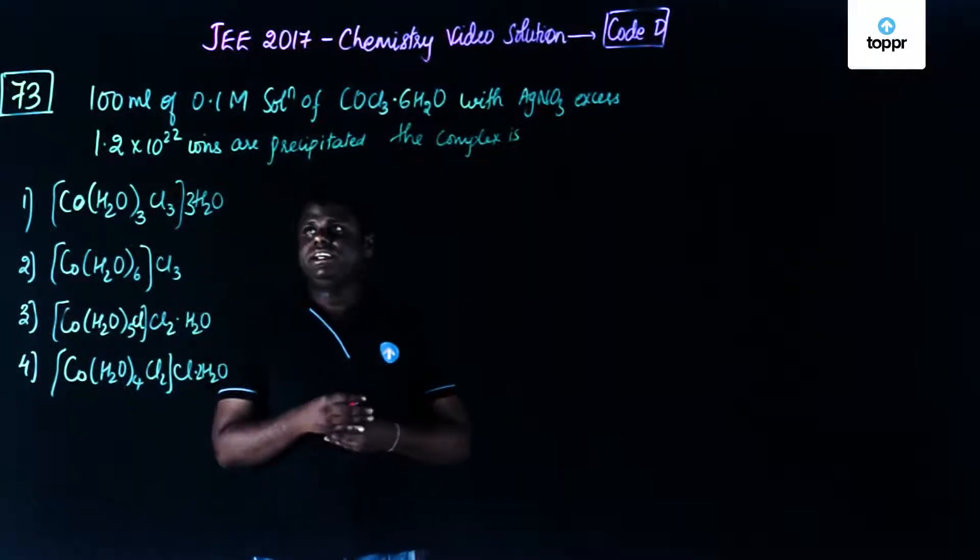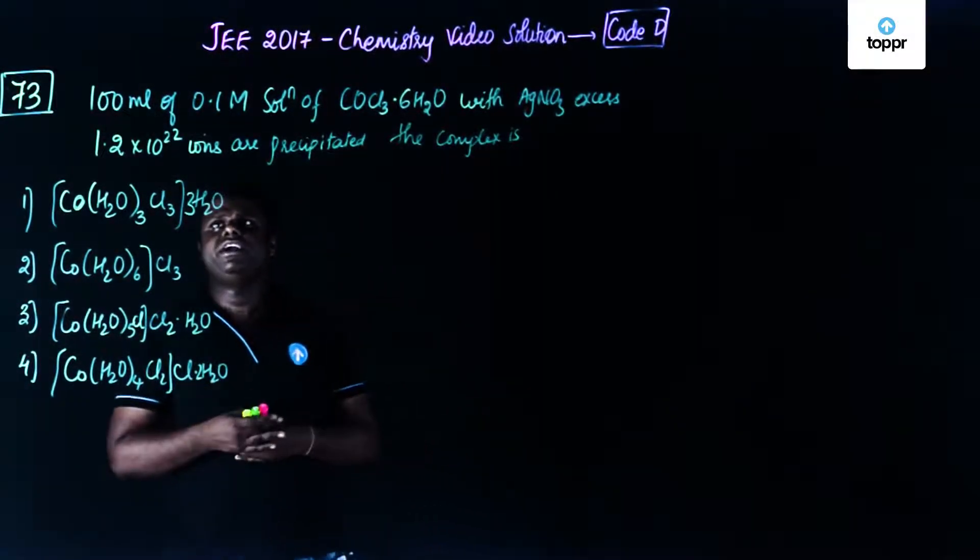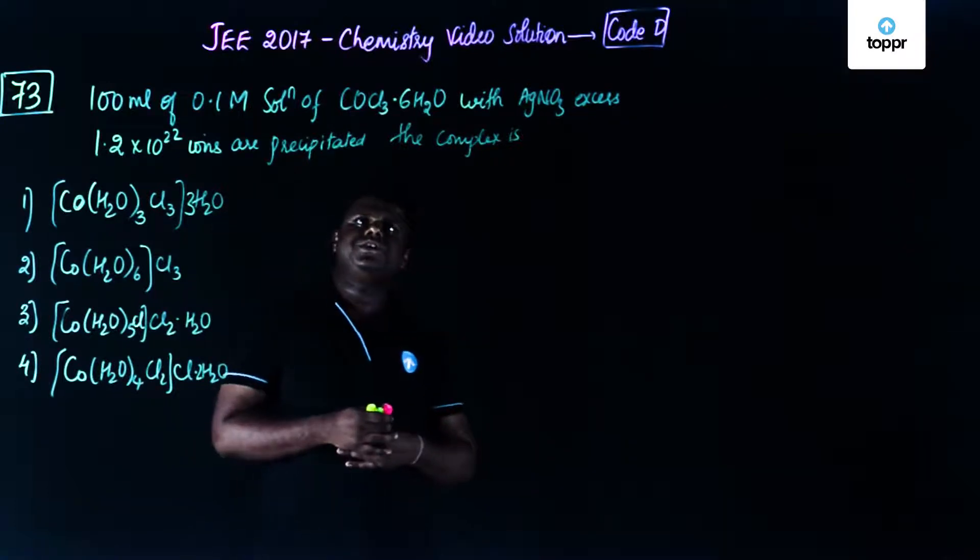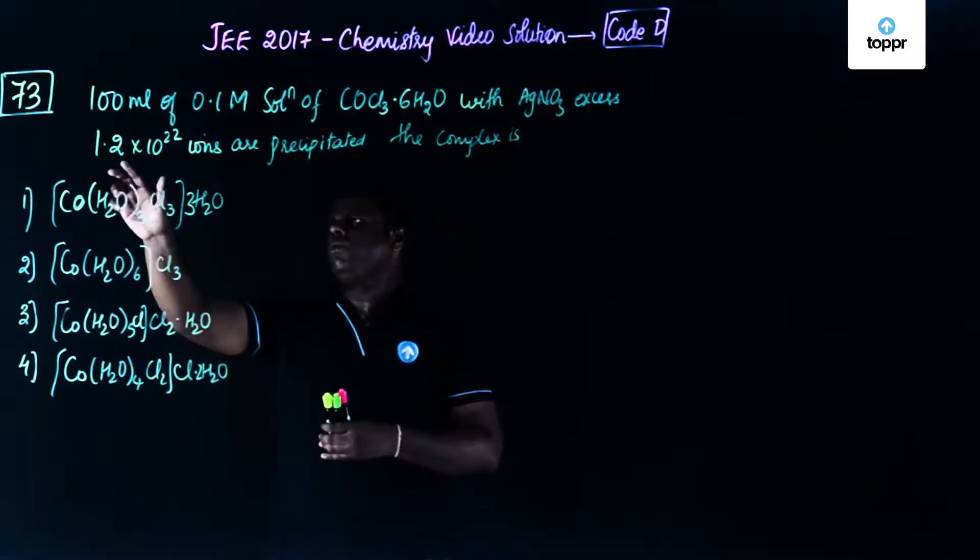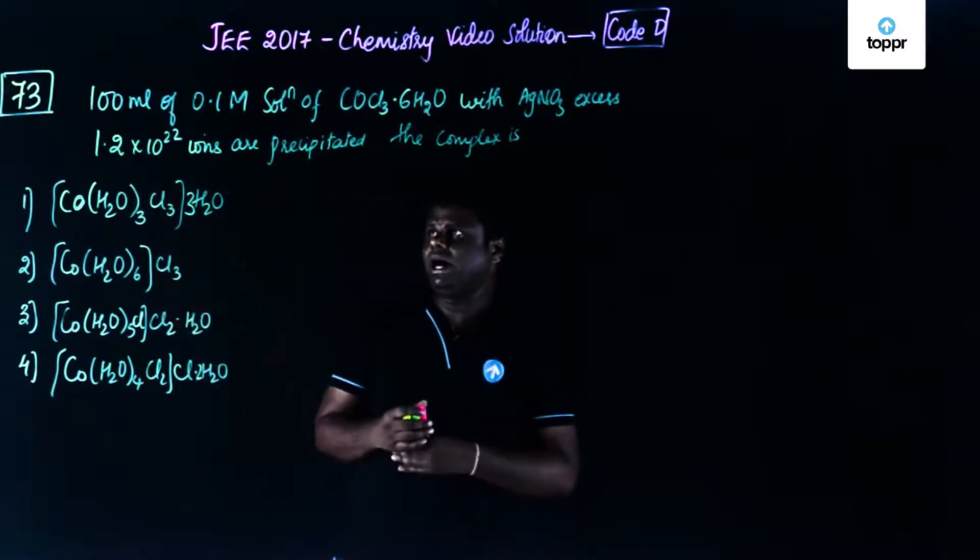Now let's move on to question number 73. The question says 100 ml of 0.1 molar solution of CoCl3.6H2O with AgNO3 excess gave 1.2 into 10 to the power 22 ions.